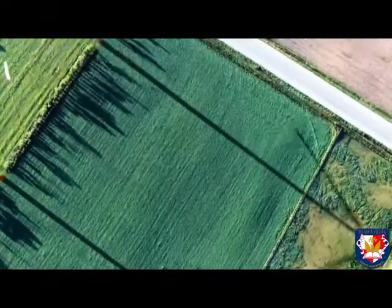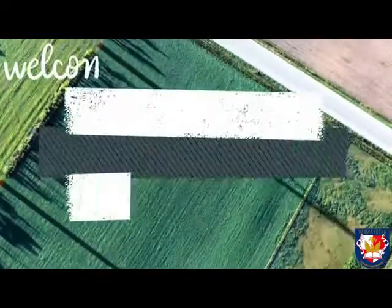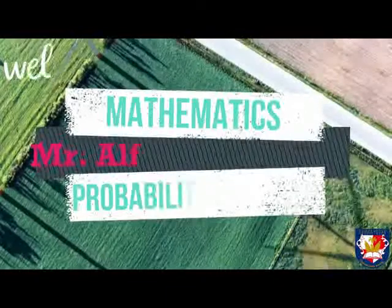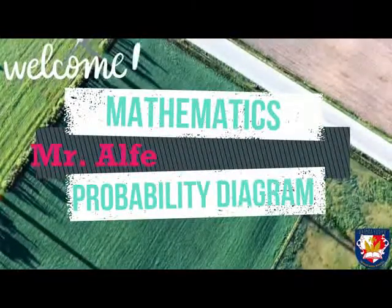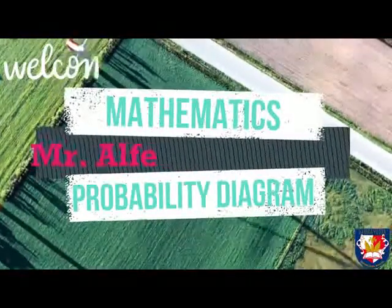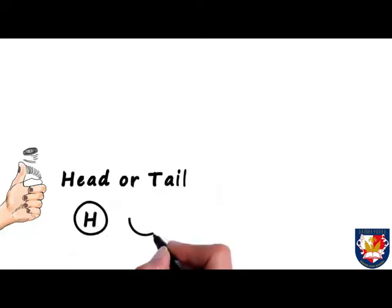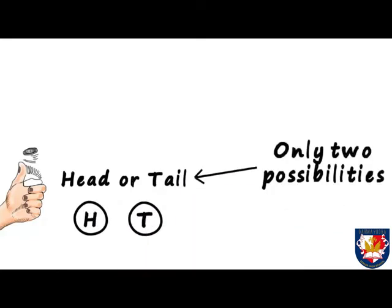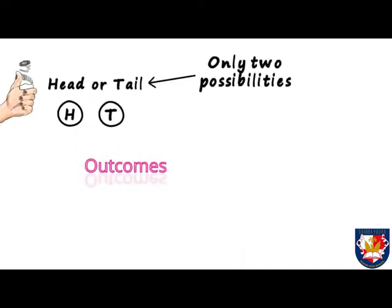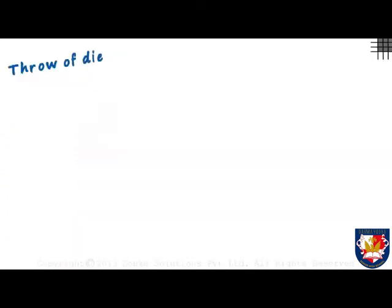Welcome back to mathematics class. Today we're going to learn about probability diagrams. When you toss a coin, it will either be a head or a tail. All of us will agree that these are the only possibilities — that's what we call outcomes.